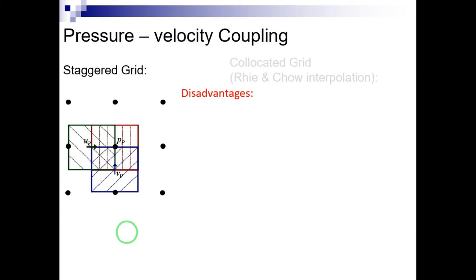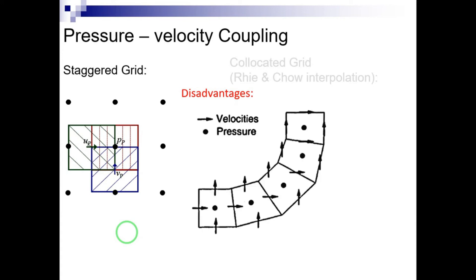Another shortcoming of the staggered grid emerges with arbitrary grids. In these cases, there is a possibility that the velocity nodes will not be placed between the pressure nodes, making it difficult to use the above-mentioned relations. To solve all these problems and reduce the storage of information, it is suggested to use a collocated grid arrangement to store velocity and pressure values in the center of the control volumes in the same nodes.